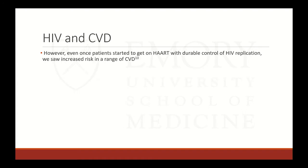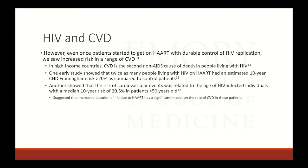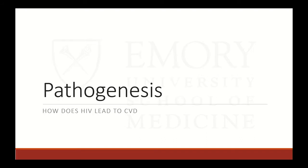Even once patients were on therapy with durable control of HIV replication, we still saw increased risk across a range of cardiovascular disease. In high-income countries, cardiovascular disease is the second non-AIDS cause of death in people living with HIV. One early study showed that twice as many people living with HIV on HAART had an estimated 10-year Framingham risk greater than 20% compared to controls. Another study showed that the risk of cardiovascular events increased with age, with a median 10-year risk over 20% in individuals who were 50 years old.